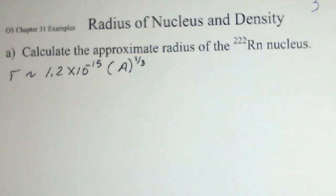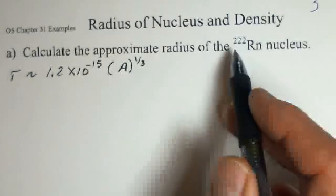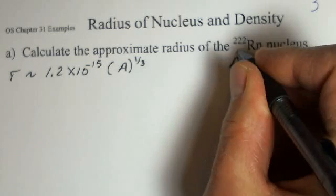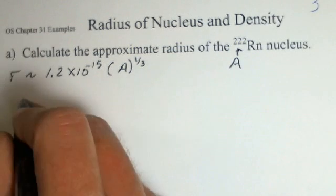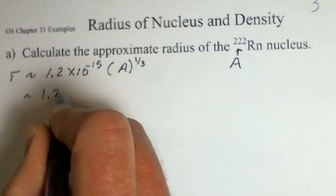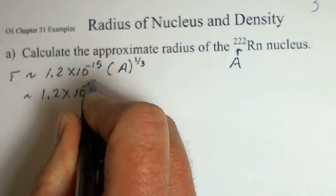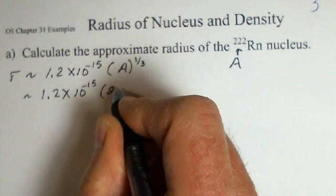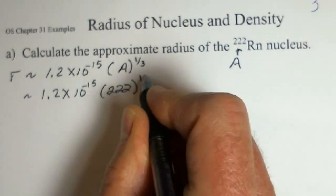the count of protons and neutrons. That total count, each proton and each neutron, contribute some volume and build up the spherical shape. For this particular situation, we have 222 is our A value that's been provided to us. So our radius is about 1.2, 10 to the minus 15,